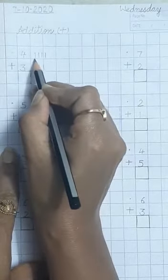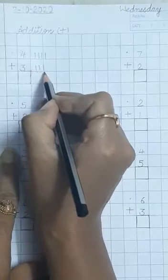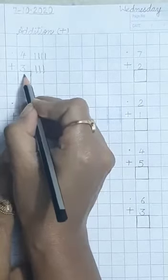Now count them. 1, 2, 3, 4, 5, 6, 7. We write here 7.